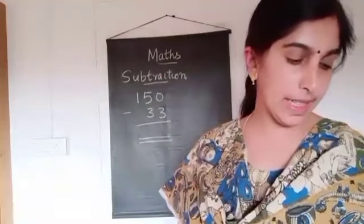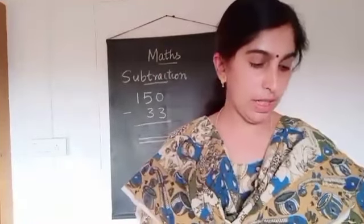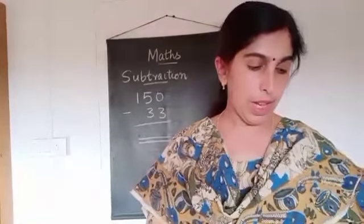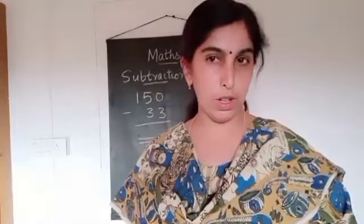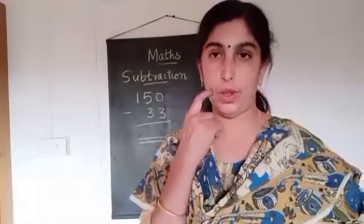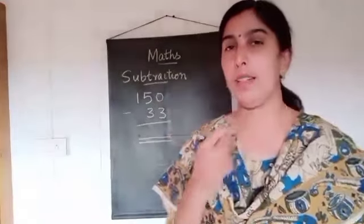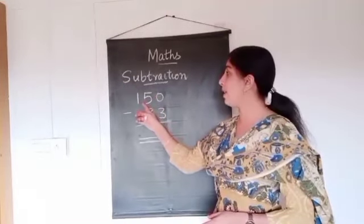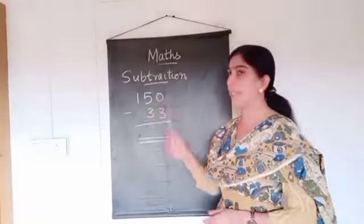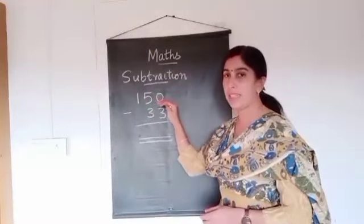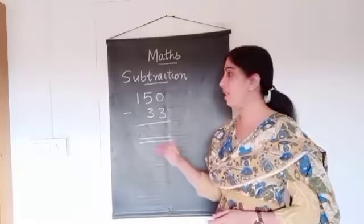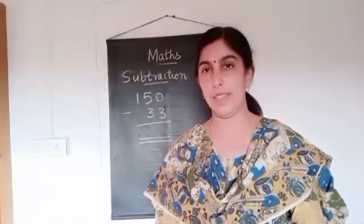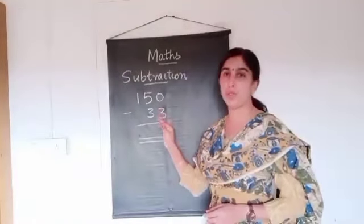Baby tortoise is 33 years old. Mummy tortoise is 150 years old. How much younger is baby tortoise than mummy tortoise? Baby tortoise is 33 years old and mummy is 150 years. What is the difference between these two? Difference means we want to do subtraction.